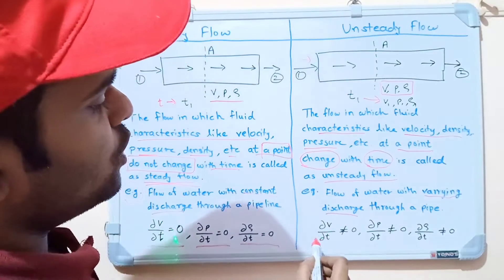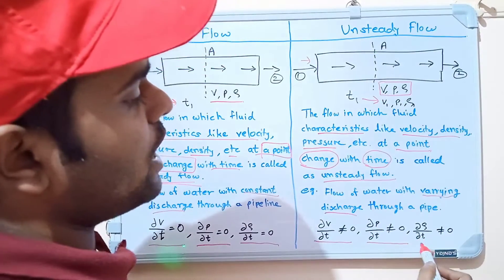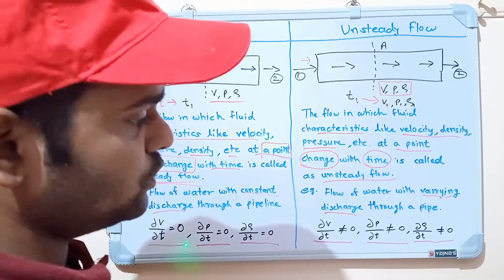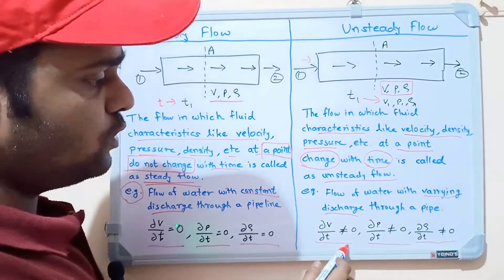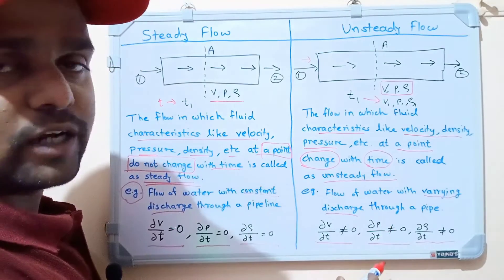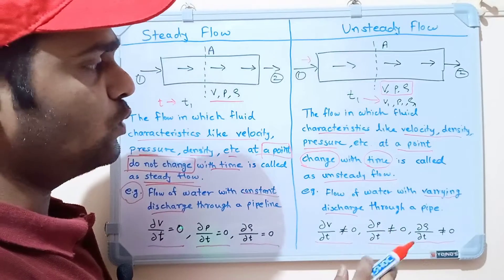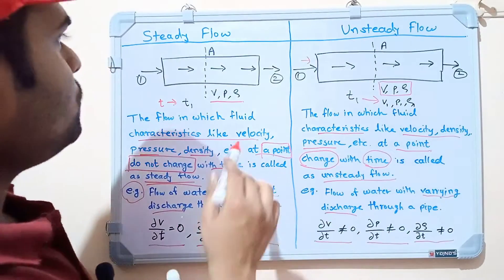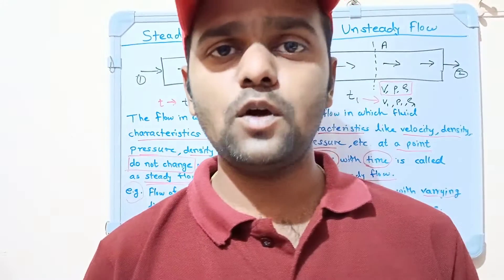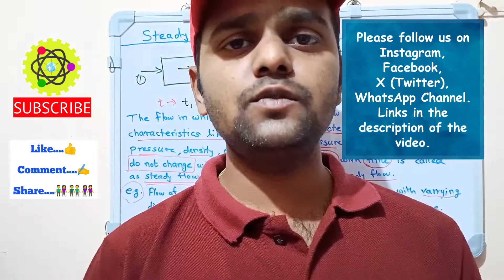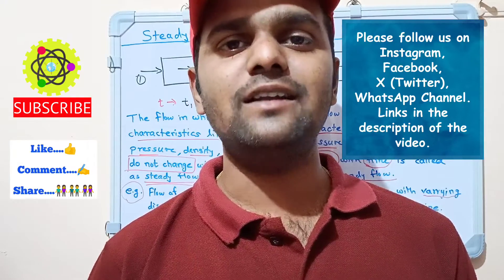The equations for unsteady flow are: ∂V/∂t ≠ 0, ∂P/∂t ≠ 0, and ∂ρ/∂t ≠ 0 — meaning change in velocity, pressure, and density with respect to time are all not equal to zero. So in this video we have understood the concept of steady flow and unsteady flow. Thank you students for watching; please like, share, comment, and subscribe.